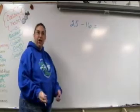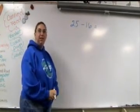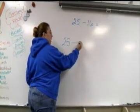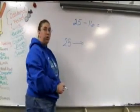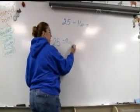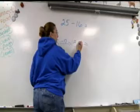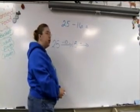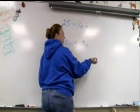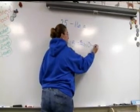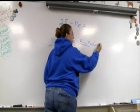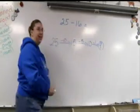I am also part of the second grade team, and I am going to demonstrate a model called arrow language. We're going to start with 25, and just like in the open number line, we're going to take 10 away first. 25 minus 10 is 15. And I have 6 left to subtract, so I am going to take 5 away first, because that's easy to subtract. 15 minus 5 is 10. And I have one more from my 6 — 10 minus 1 is 9. And that is arrow language.